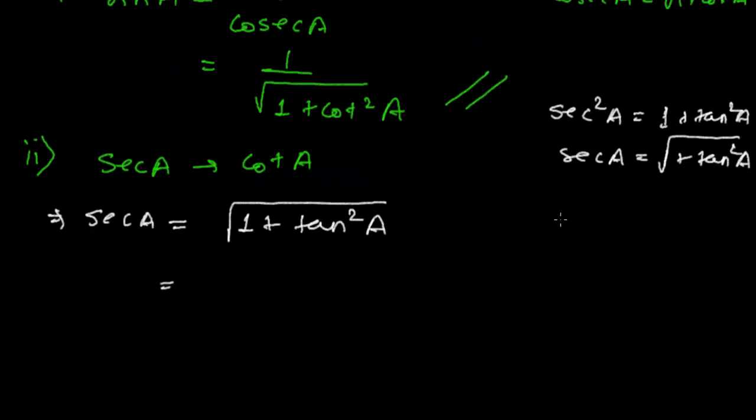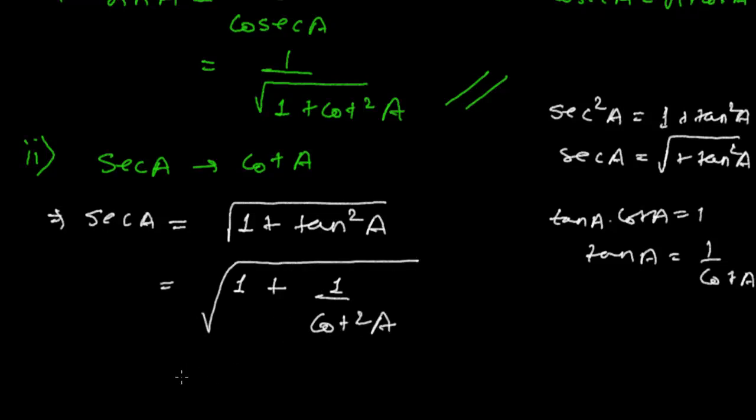Now we know that tan and cot are reciprocals. I mean tan A dot cot A equals to one, therefore tan A equals to one upon cot A. So I can now write one plus one upon cot square A, root over, or